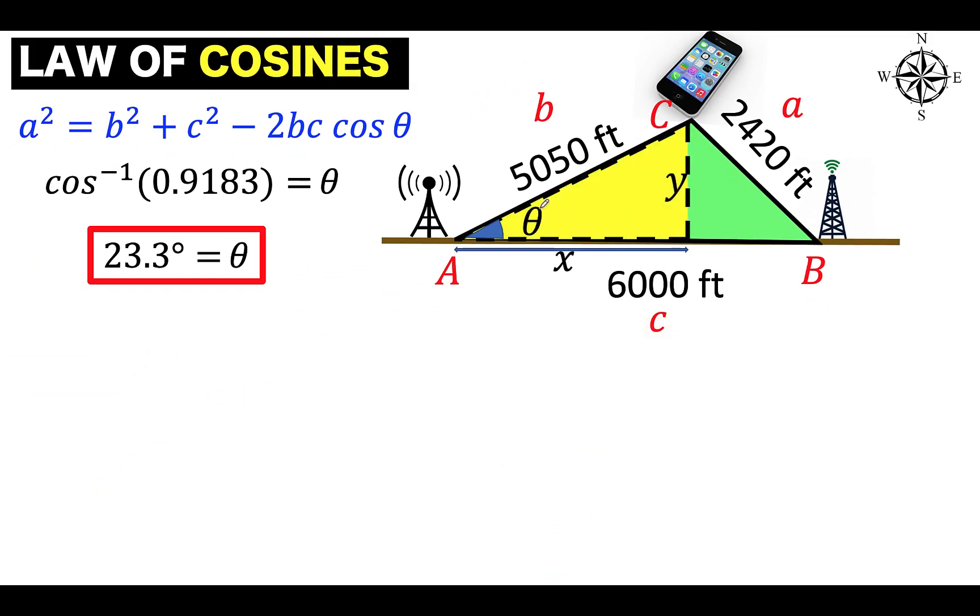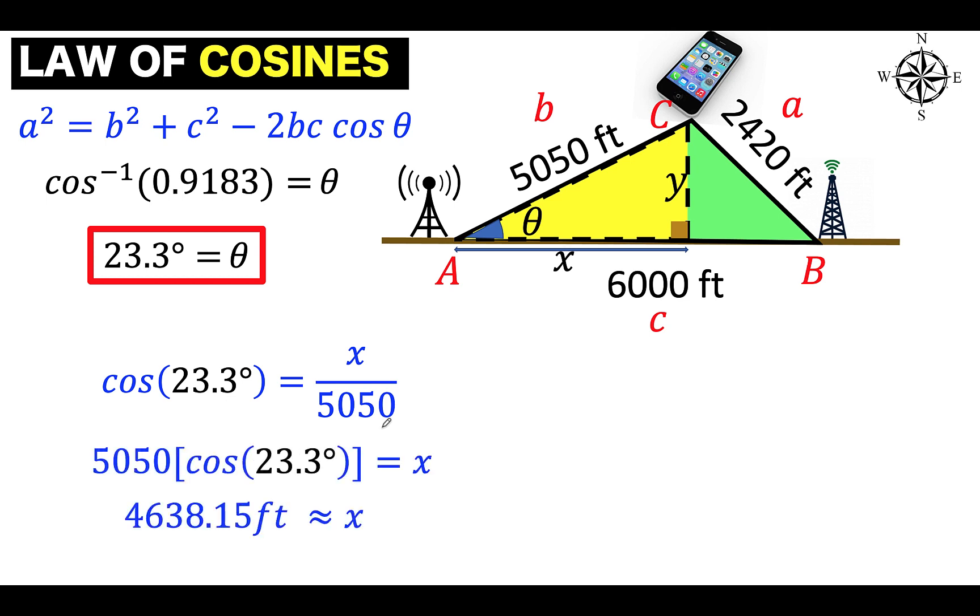So let's recall that with respect to the angle theta, this side denoted as x is the adjacent side, and this side with a measure of 5,050 feet is the hypotenuse. And adjacent over the hypotenuse is cosine. So the cosine of the angle is equal to x over 5,050. Here, our angle is 23.3 degrees. So solving for x, we multiply both sides by 5,050. And using our calculator, we have a value of x to be approximately equal to 4,638.15 feet. That is the measure of this side here.